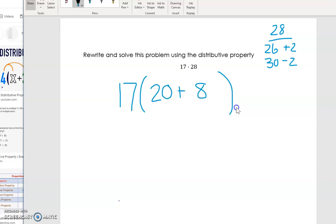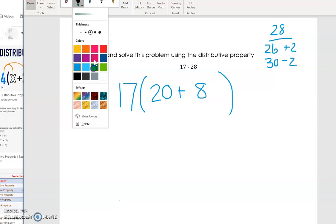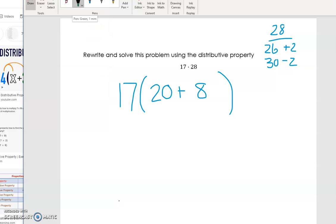So that step is showing the distributive property. And then when I evaluate, because I want to solve this time, I'm going to do out the multiplication by taking the 17, multiplying it by both the numbers on the inside. So 17 times 20 as well as 17 times 8.